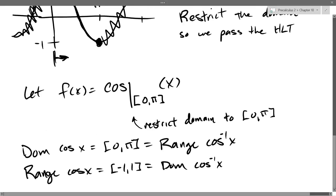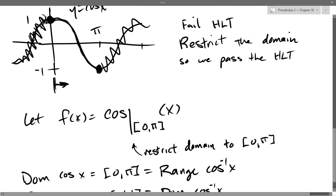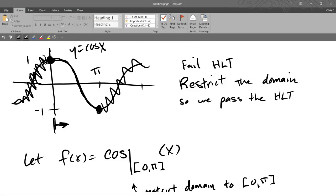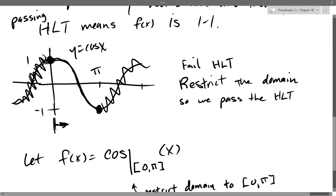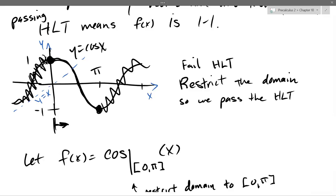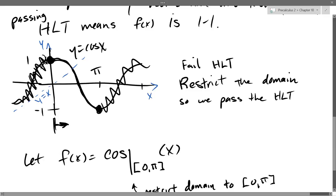We know the domain and range of cosine inverse and we're ready to graph it. The way we graph inverses is by swapping the roles of x and y. I'm going to graph the line y equals x — it's a linear function, slope 1, through the origin. All we're going to do is swap the x and y axes, making them trade places. You can think of it as rotating halfway across the line y equals x, or reflecting — we're just going to take the graph and turn it over.